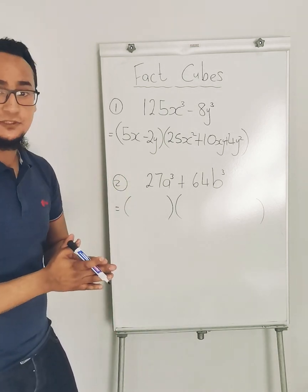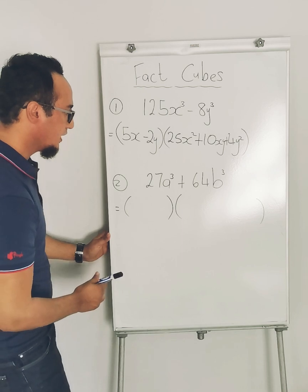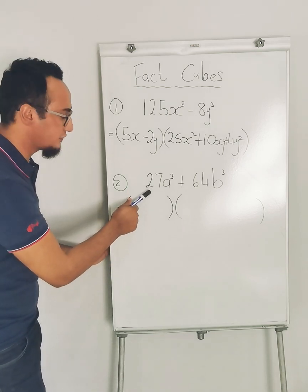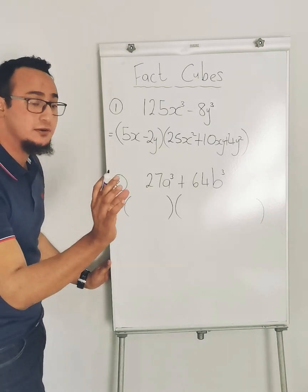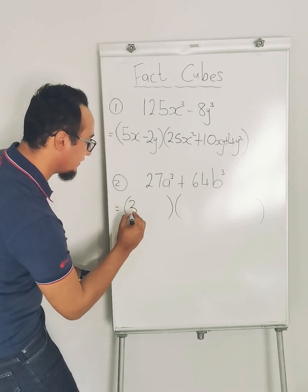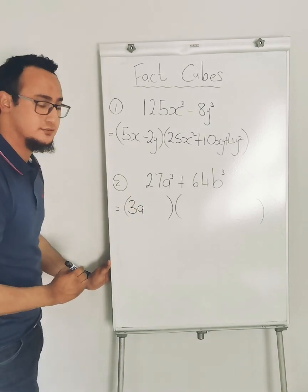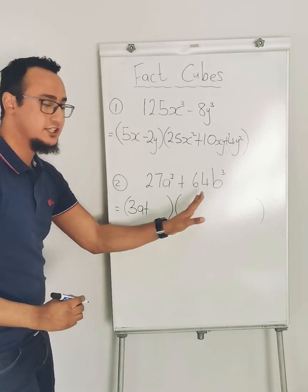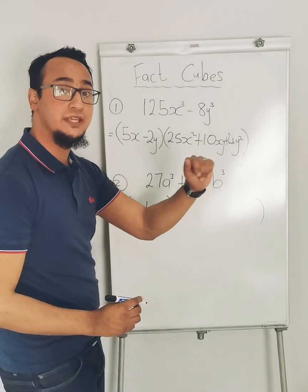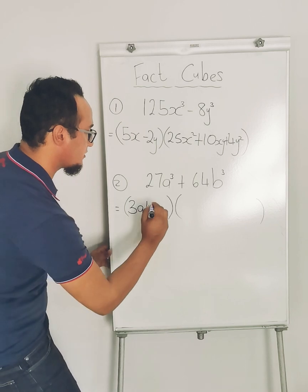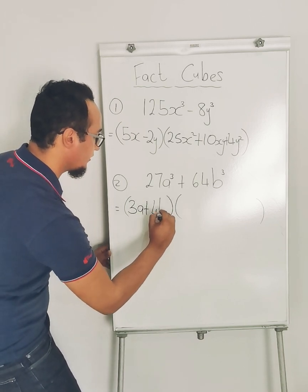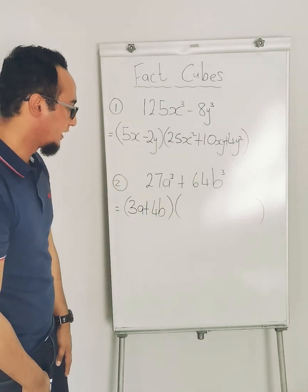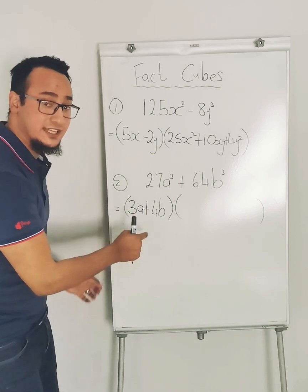That was a little bit difficult. Let's go on to the next one. The cube root of 27a³ is 3a. What's that sign? Plus. What's the cube root of 64b³? The answer would be 4b.